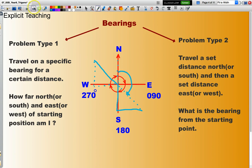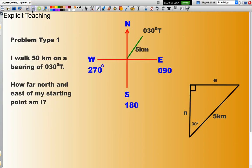Here, they are the two types of problems we will be looking at in this presentation. So, let's move to problem type 1. Say for instance I walk 50 kilometres on a bearing of 030 degrees true. So, my question might be how far north and east of my starting point am I? In other words, here is the 30 degrees. And I have travelled 5 kilometres along in that 030 direction.